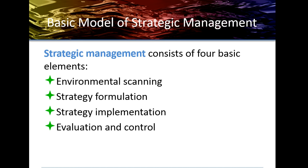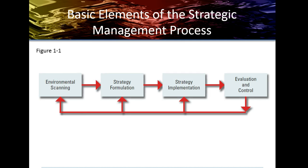Strategic management consists of four basic elements: environmental scanning, strategic formulation, strategic implementation, and evaluation and control. This is basically a four-step process that keeps cycling continuously, so as we come up with a new idea, it sometimes has to go through this process again. It's a continuous improvement effort by corporations following a strategic process.